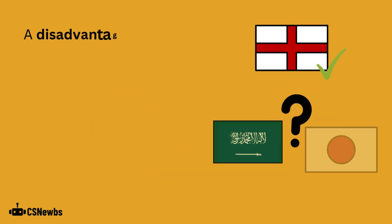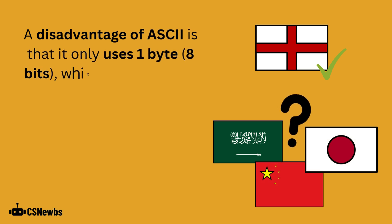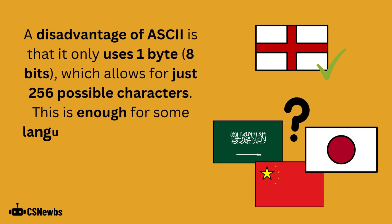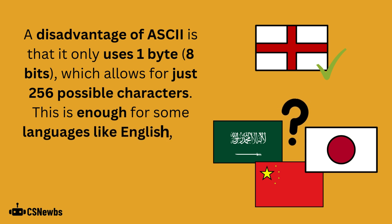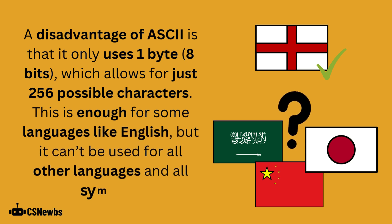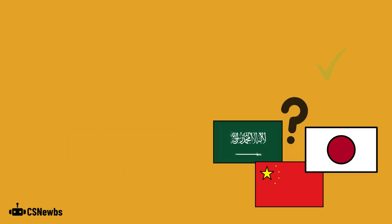A disadvantage of ASCII is that it only uses one byte, which allows for 256 possible characters. This is enough for some languages like English and most of Spanish or German, but it can't be used for all other languages and all symbols.